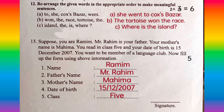She went to Cox's Bazar. The tortoise won the race. Where is the island? Suppose you are Rameem, Mr. Rohim is your father, your mother's name is Mahima. You read in class 5 and your date of birth is 30 December 2007. You want to be a member of the language club. Fill up the form using the above information: name, father's name, mother's name, date of birth.